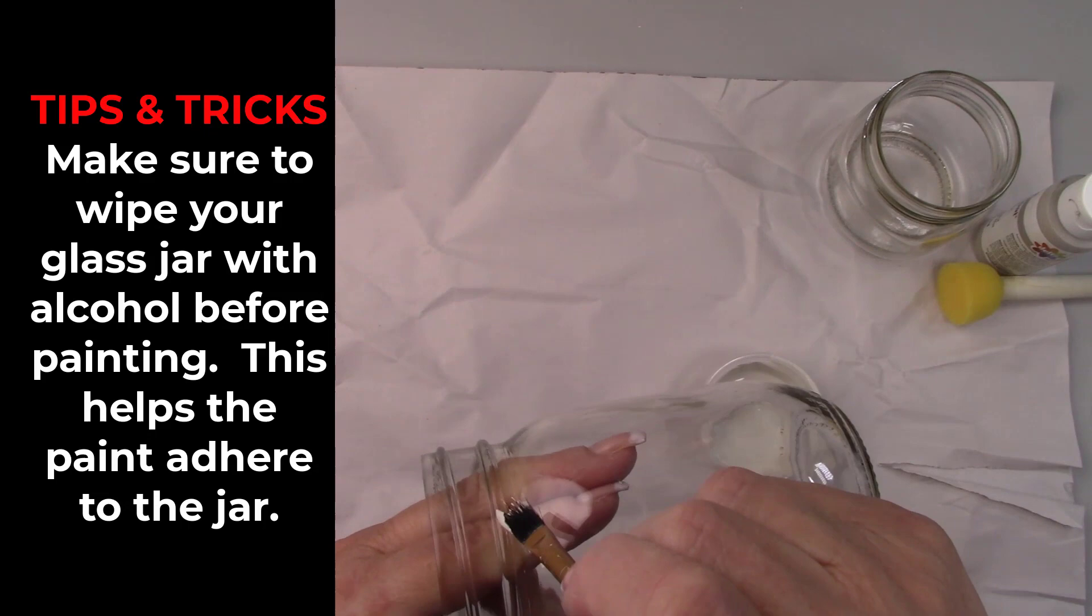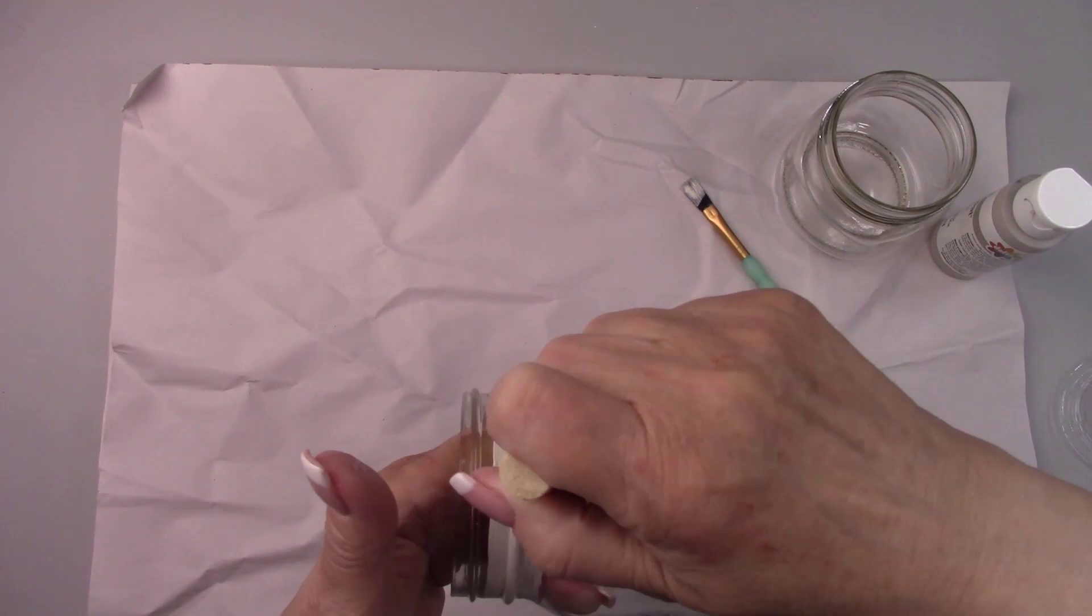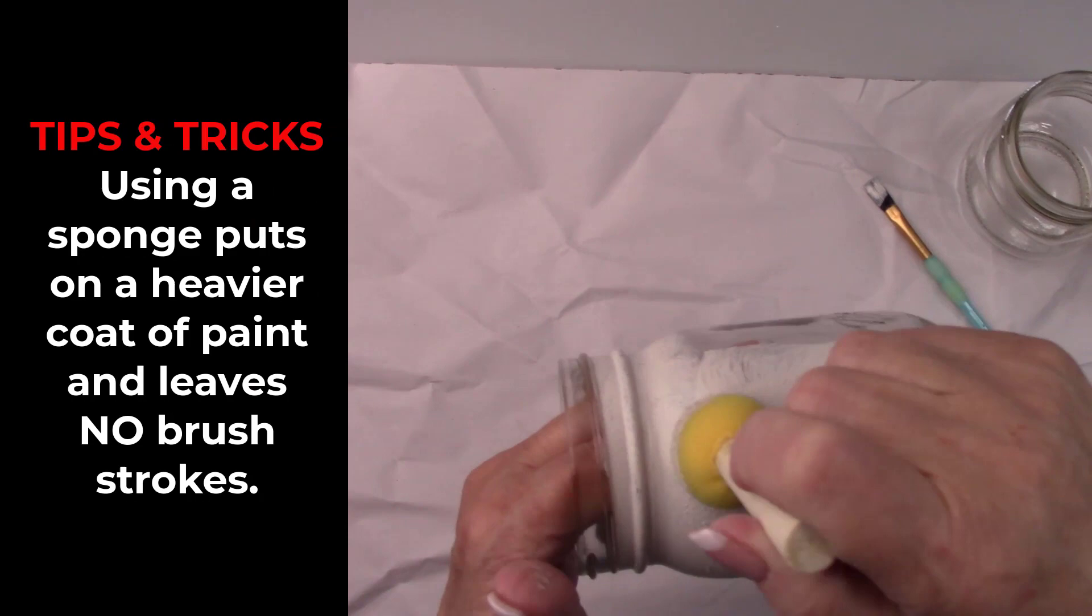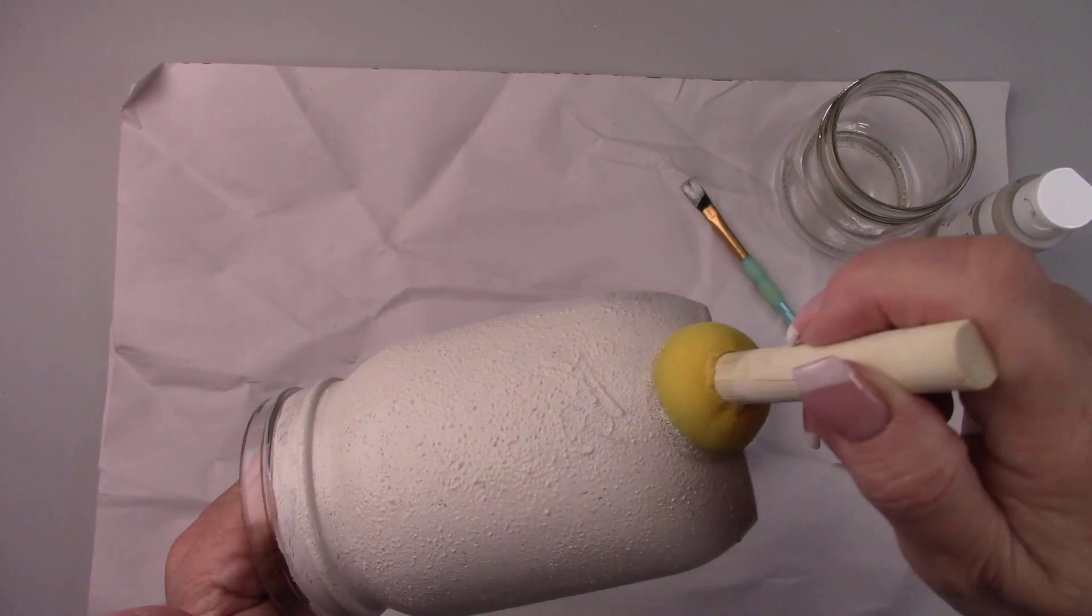After the first coat was dry, I sprayed the jars with a clear matte spray sealer to prevent peeling and chipping. I'll cover the threads with painters tape before I spray the sealer. That way there will be no problem with the soap dispenser lids screwing on. Whatever you do, don't skip this step. I have a video on why this is so important. Click the link in the above right hand corner to see that video.